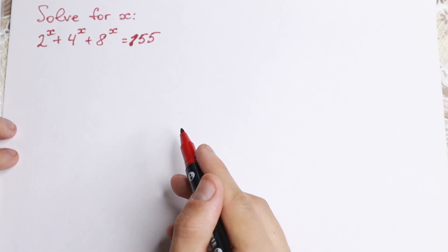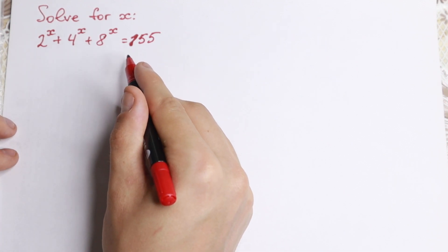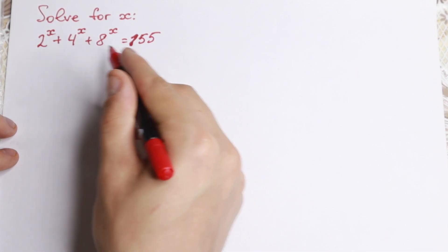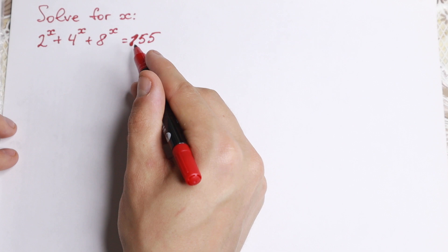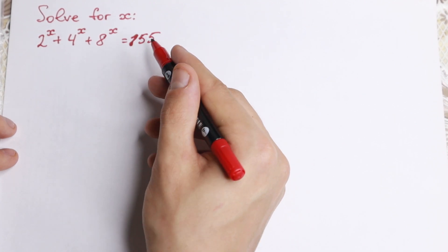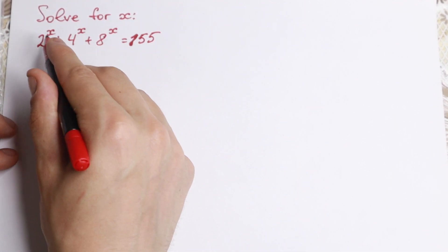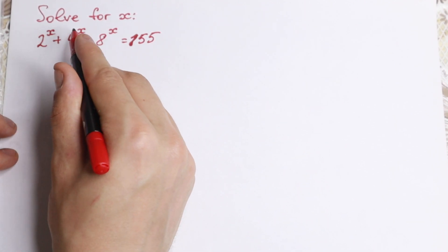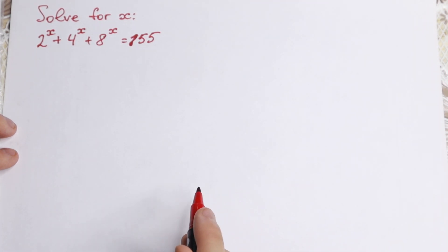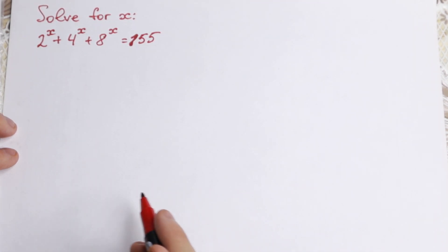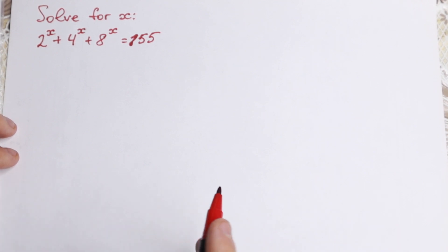At first glance this equation looks really hard and difficult, because we have all different bases — 2, 4, and 8 — and a number on the right-hand side. We also have three terms with power x, which makes it hard to work with exponents. But I want to show you a really good way to solve it.